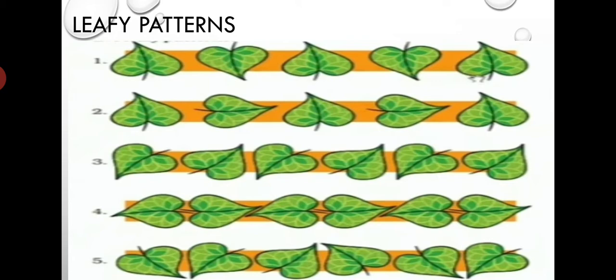Look at the fourth pattern and fifth pattern. One leaf can be kept in different positions and you can form different types of patterns. You also take the same type of leaf, around six or seven leaves, and make different kinds of patterns. Do this at your home.